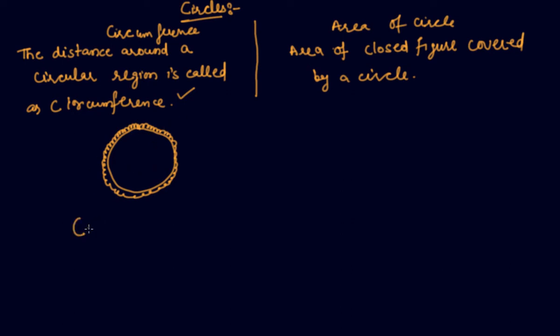So the formula for circumference is, means this is the total distance around a circular region. So this is 2πr, where r is the radius of a circle, and where π is a constant of value 22 by 7.